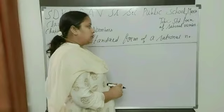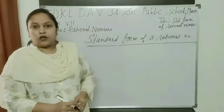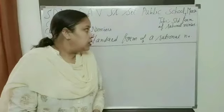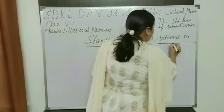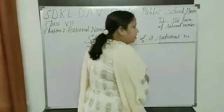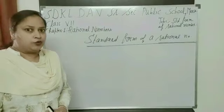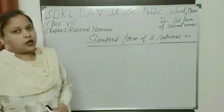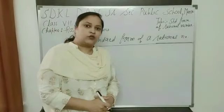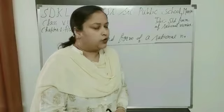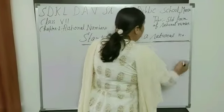But before starting my topic, I will review the definition of Rational Number. A number which can be written in the form P upon Q, where P and Q both are integers and Q is not equal to 0, is known as a Rational Number.